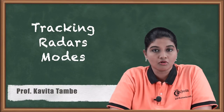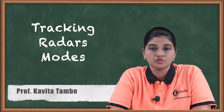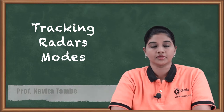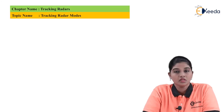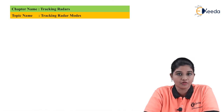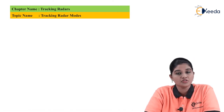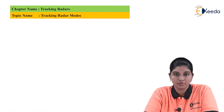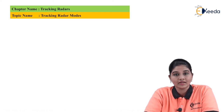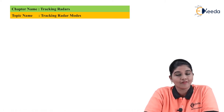In this video we are going to talk about the various tracking radar modes used by the tracking radar. The term radar stands for radio detection and ranging. Radar was originally invented in World War Two by the military in order to detect the position and location of the enemy. At that time radar was used as an electronic eye to fulfill military application requirements.